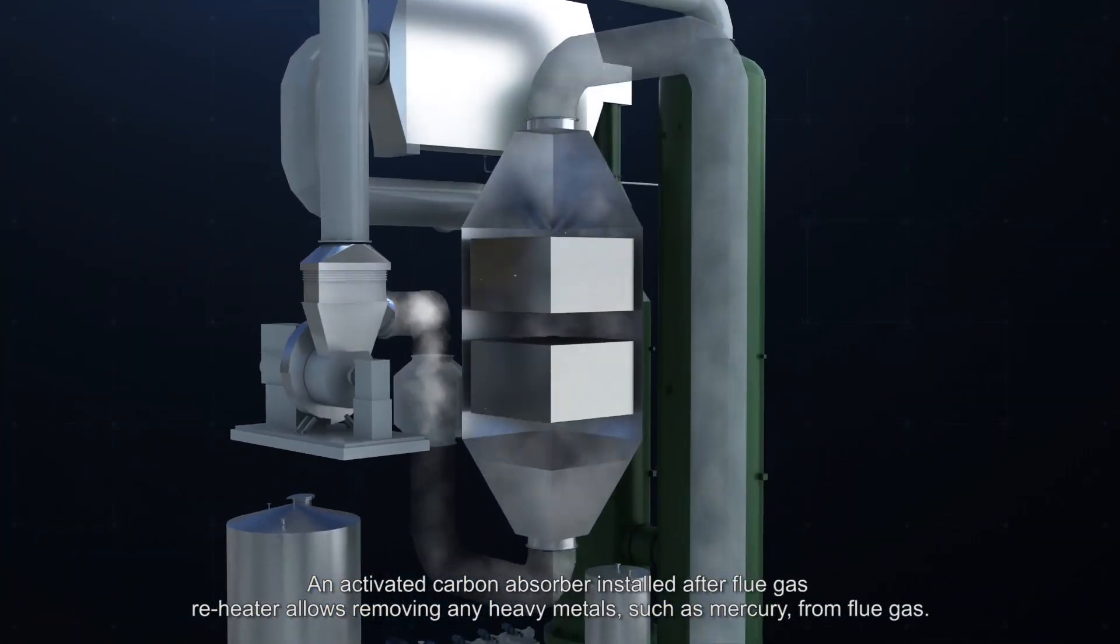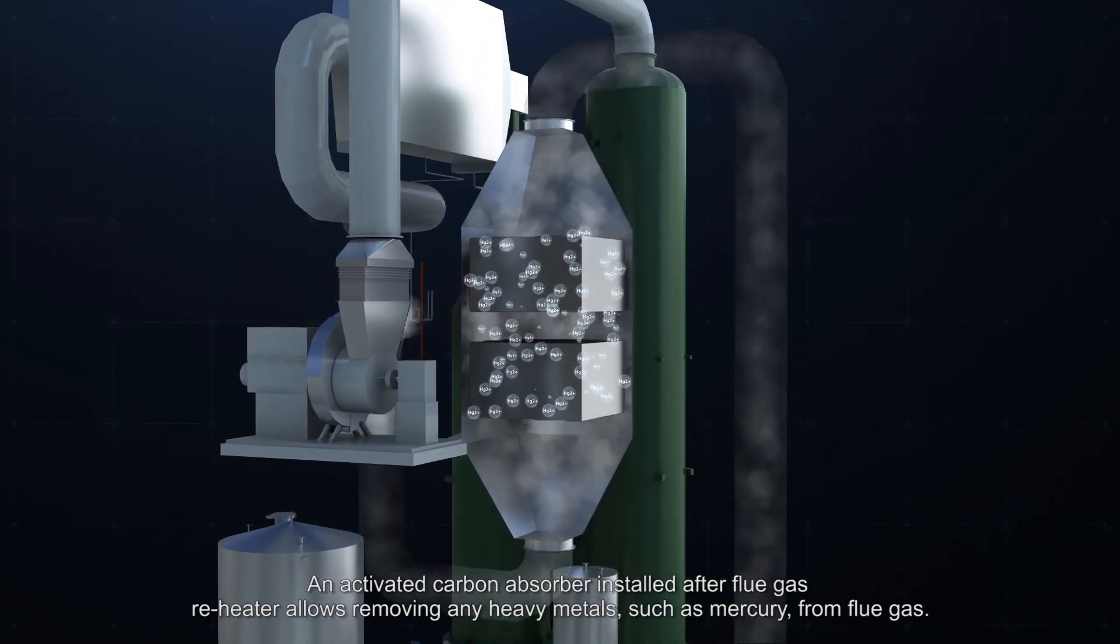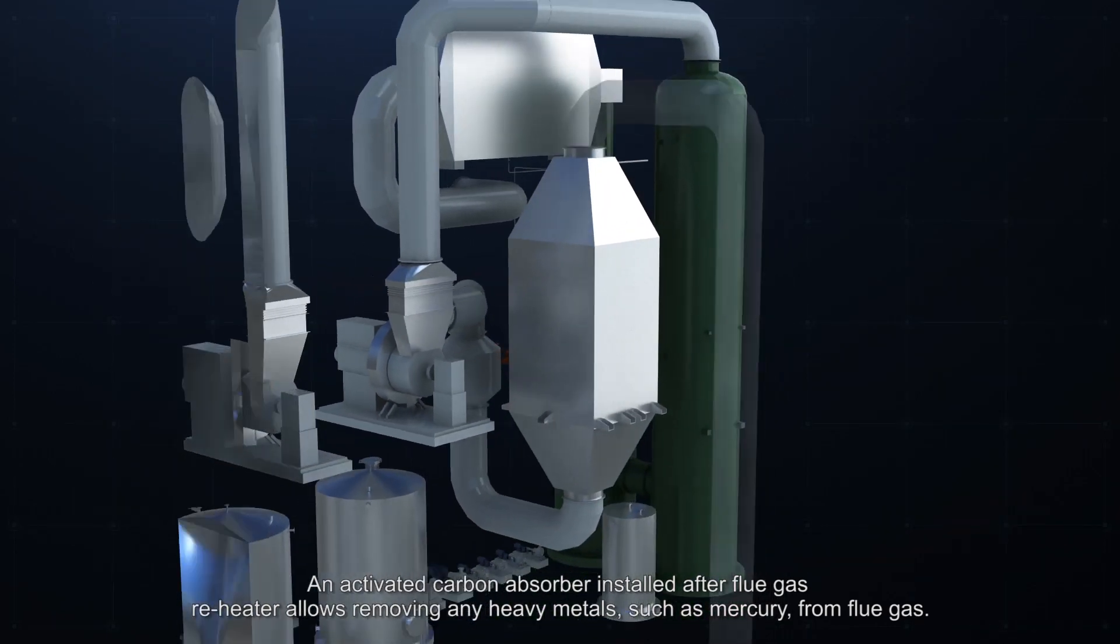An activated carbon absorber installed after flue gas reheater allows removing any heavy metals such as mercury from flue gas.